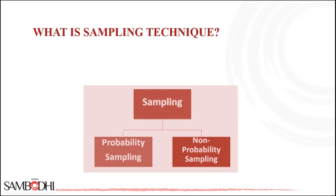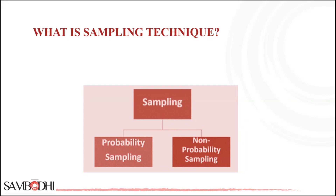The non-probability sampling method is a technique in which the researcher selects the sample based on subjective judgment rather than random selection. In this method, all elements do not have an equal chance of being selected. Consequently, there is a significant risk of ending up with a non-representative sample, which does not produce a generalizable result. These are the two types of techniques you can utilize when doing research.